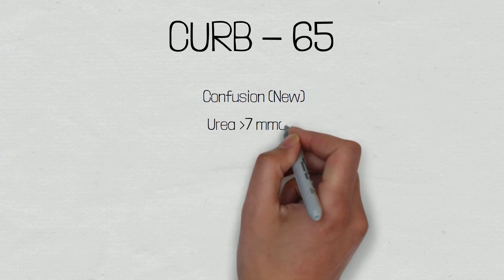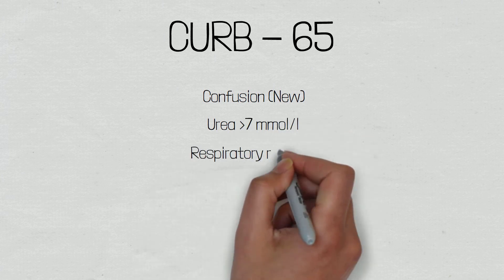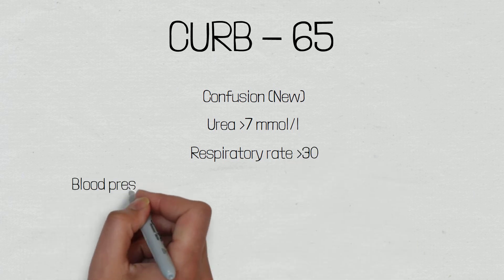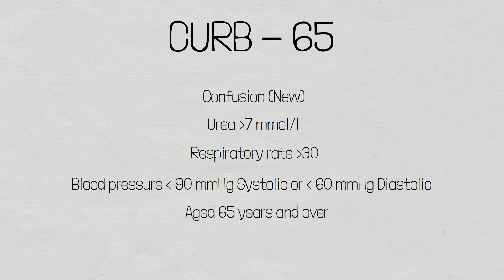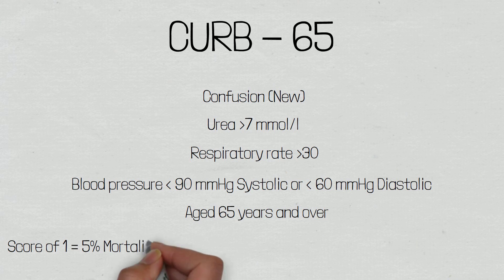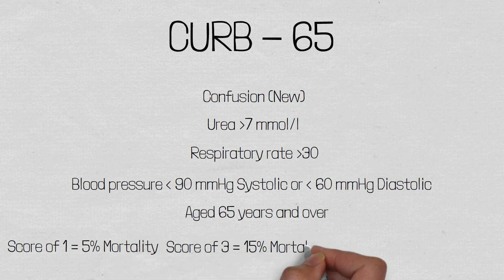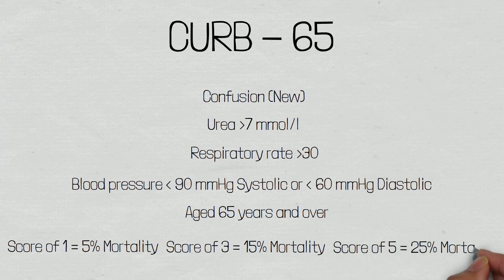After we've conducted the physical examination, these patients may need further investigations, but this isn't always necessary, especially if the patient can be managed safely in the community. A tool that can be used to help predict mortality is the CURB-65 score, or the CRB-65 score if operating in the pre-hospital environment. Each parameter scores a 1 if present: a new onset of confusion, urea greater than 7, a respiratory rate greater than or equal to 30, a systolic less than 90 or diastolic less than 60, and if the patient is aged over 65. A score of 1 corresponds to a predicted under 5% mortality rate, a score of 3 is 15% mortality, and a score of 5 is over 25% mortality.